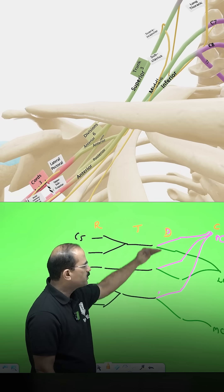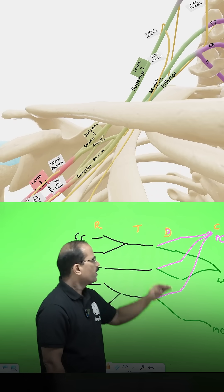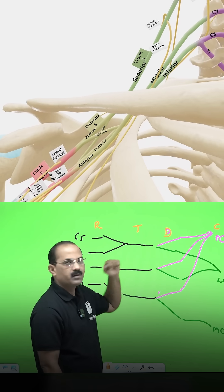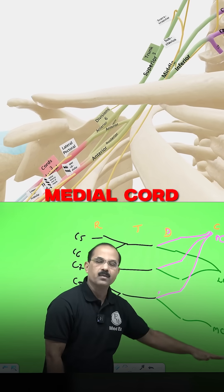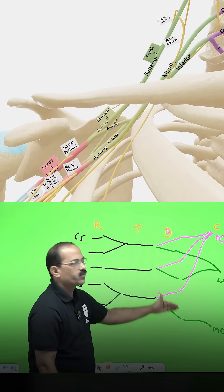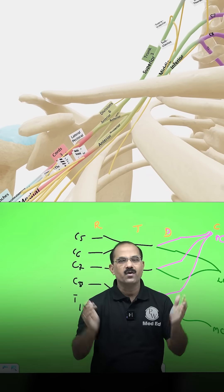Pink is dorsal, green is ventral division. Ventral division of upper and middle trunk form the lateral cord. Ventral division of lower trunk continues as the medial cord. And dorsal division of all the three trunks join to form the posterior cord.